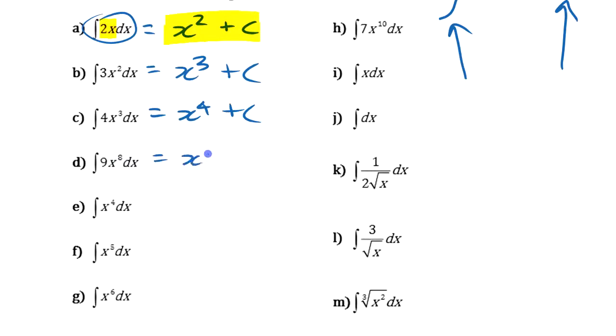9x to the eighth, x to the ninth. If there's no coefficient in front, you have to think a little bit more first. If you're taking the integral of this x to the fourth here, it's going to be x to the fifth. You've got to bump that power up one. But then, since there's no coefficient in front, you have to actually divide by that. You can write divided by five or one-fifth.